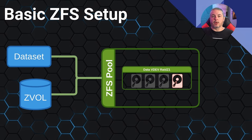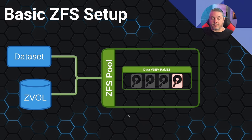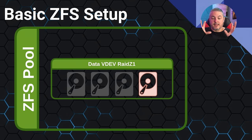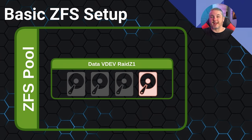There are plenty of videos linked below covering more ZFS complexities, caching, and how it works. Here we're going to focus just on the data VDEVs. The way ZFS works is your ZFS pool has datasets and ZVols. Most of you probably only use datasets, and this is where your shares come from. We're going to focus on the data VDEV types specifically, because when people want to expand, this is what they're asking about.